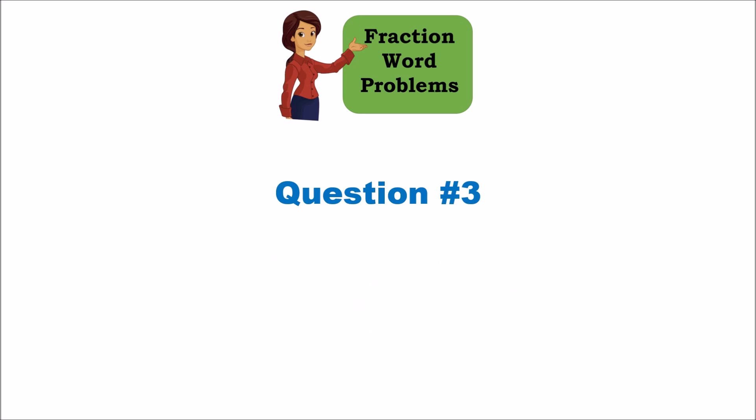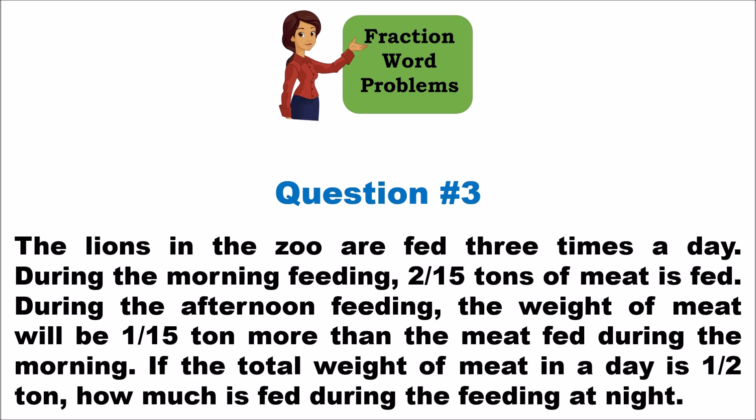Question number three: lions in the zoo are fed three times a day. During the morning feeding, two-fifteenths of a ton of meat is fed. In the afternoon, the weight of meat is one-fifteenth more than the morning. If the total weight of meat in the day is half a ton, how much is fed during the night feeding?